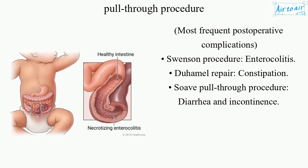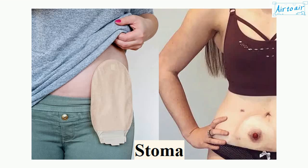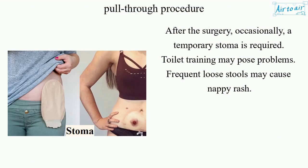Most frequent postoperative complications: Swenson procedure — enterocolitis; Duhamel repair — constipation; Soave pull-through procedure — diarrhea and incontinence. After the surgery, occasionally a temporary stoma is required. Toilet training may pose problems, and frequent loose stools may cause nappy rash.